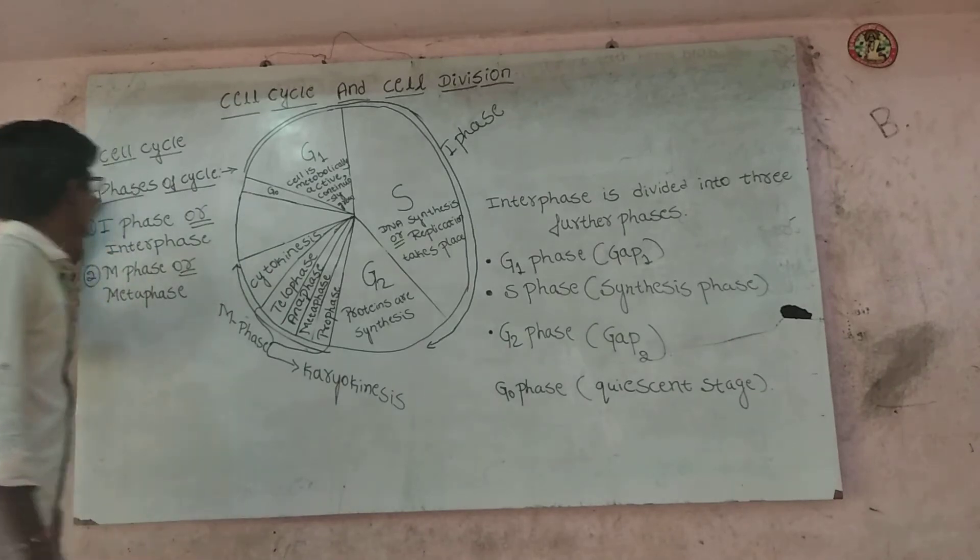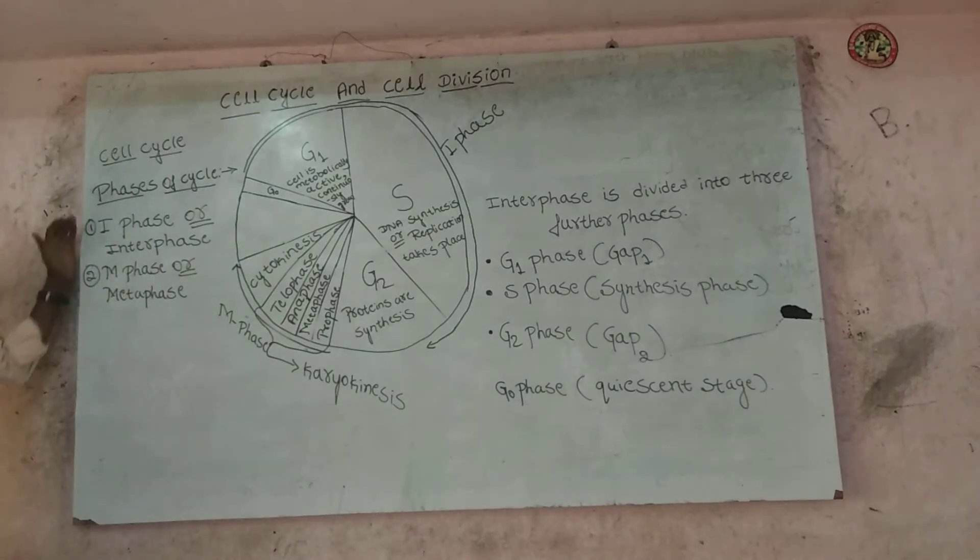There are two phases of the Cell Cycle: I phase and M phase. I phase is also called interphase. M phase is also known as mitotic phase.